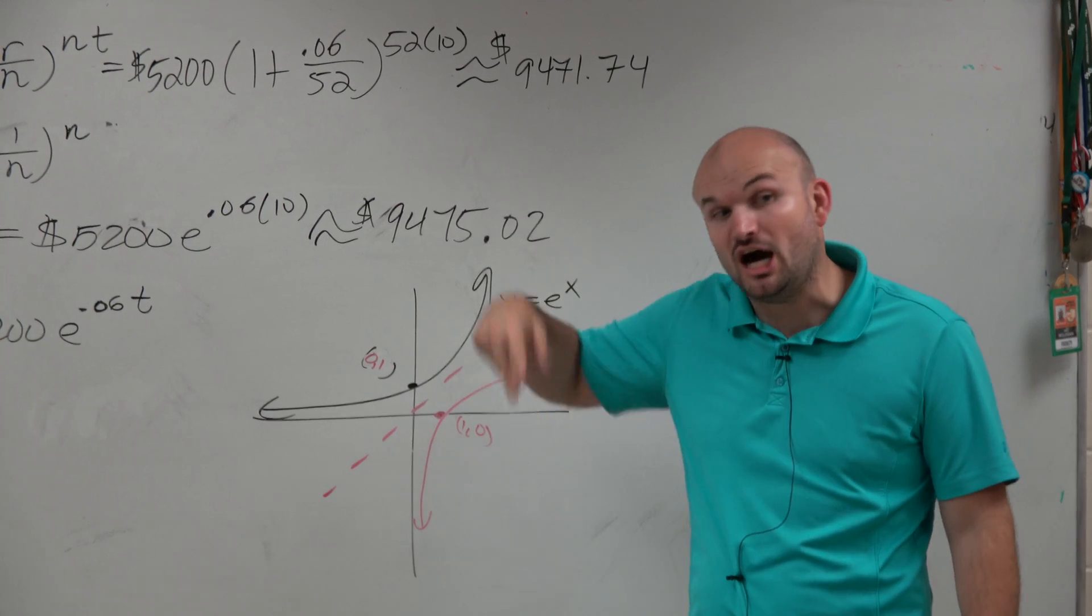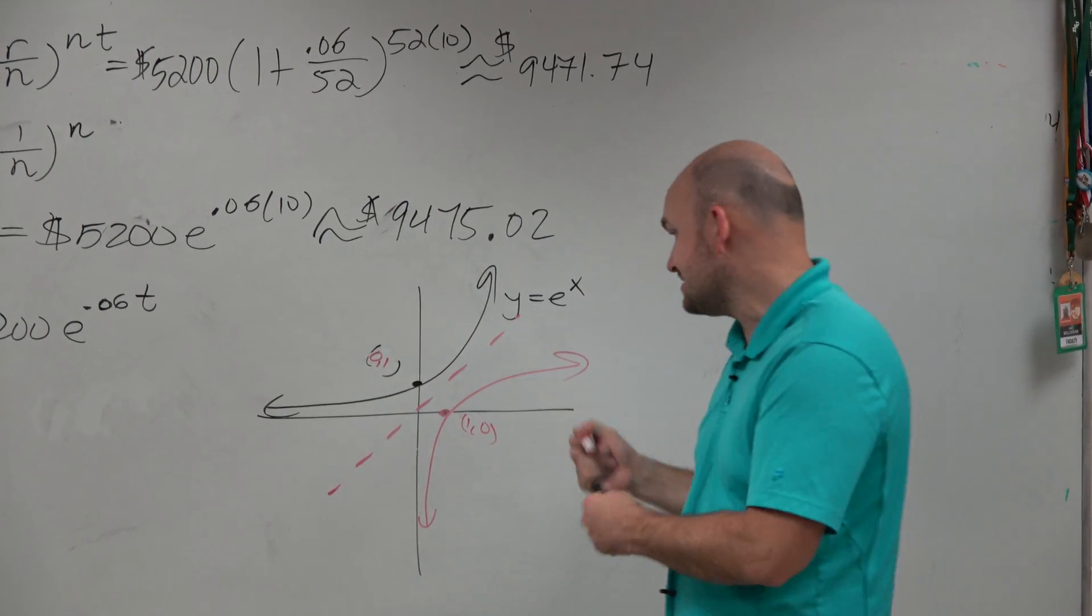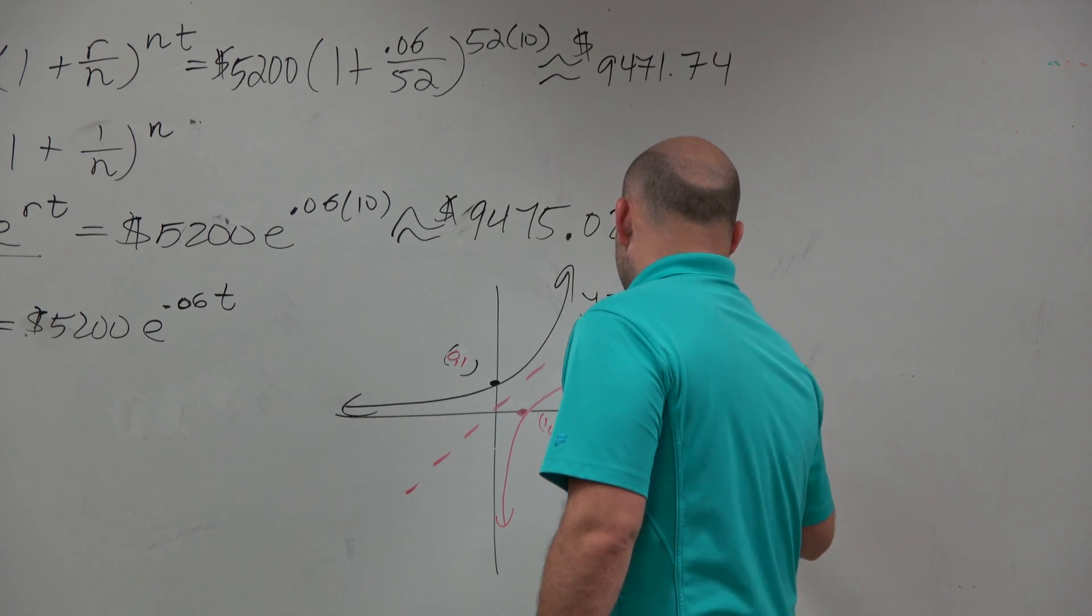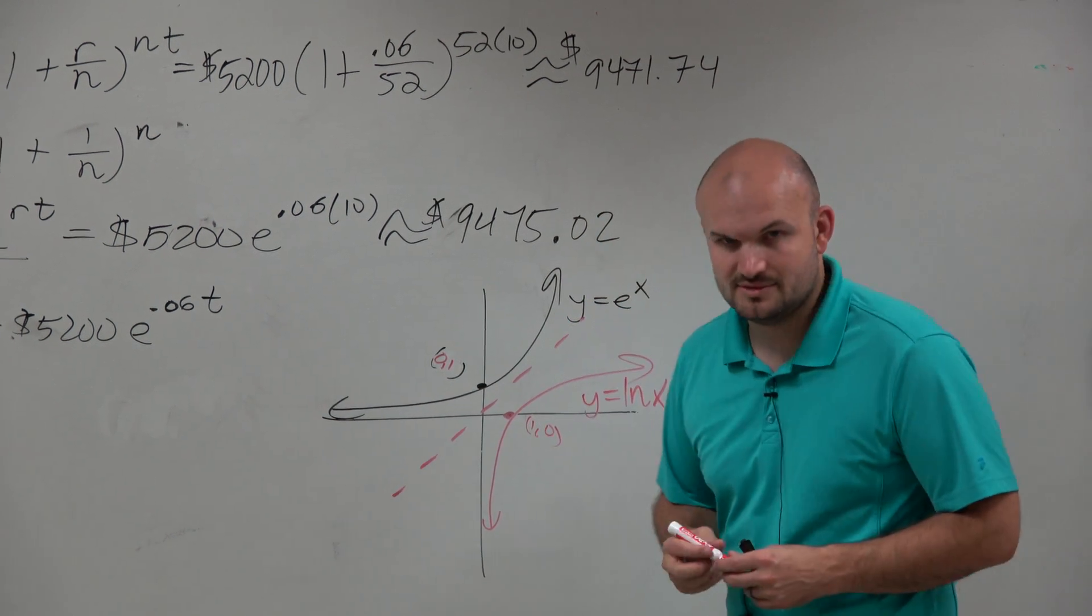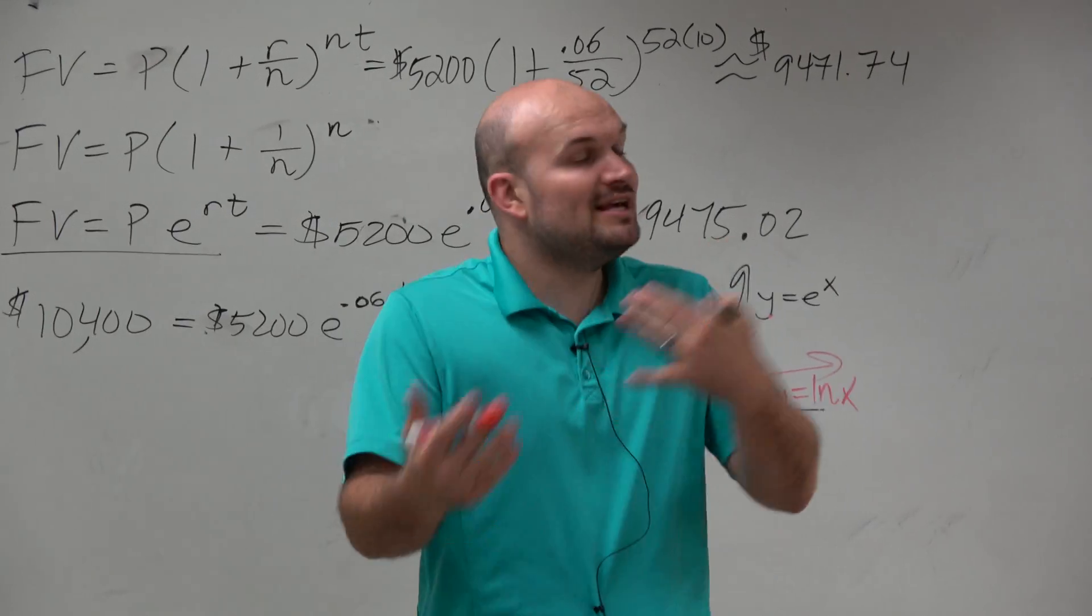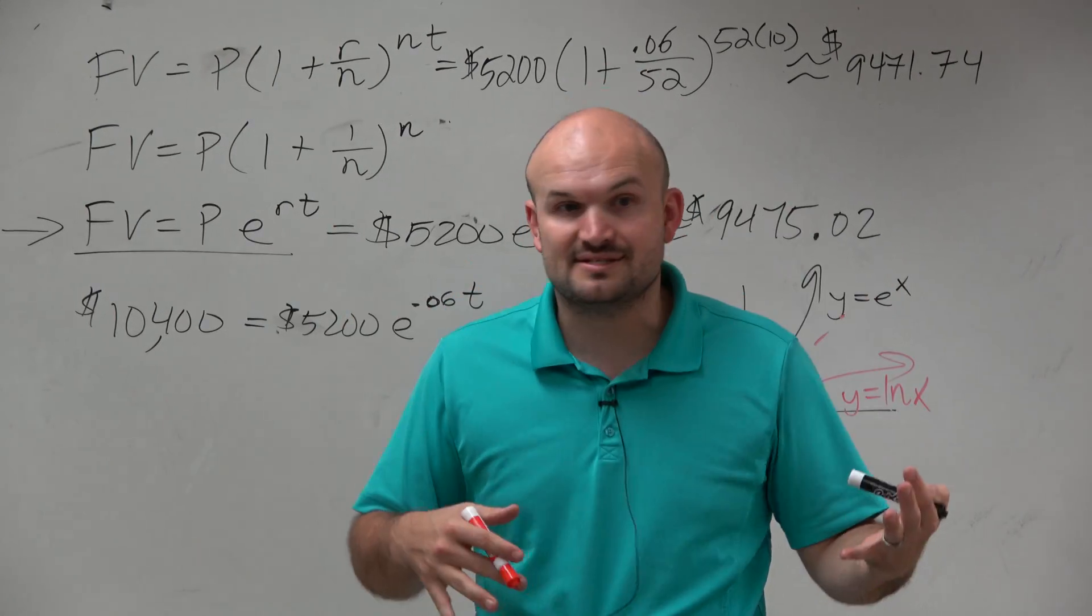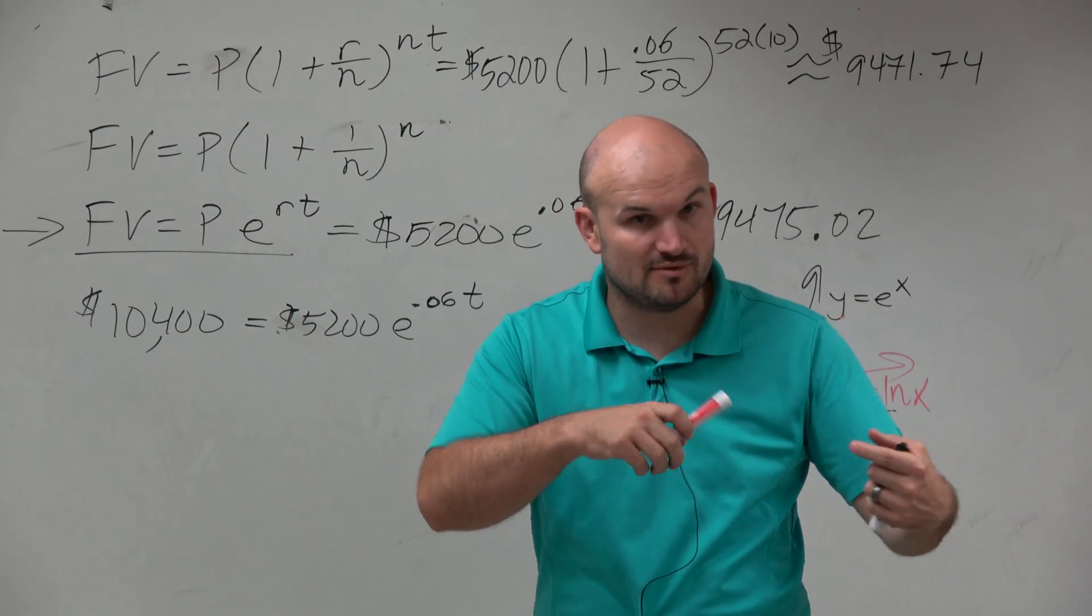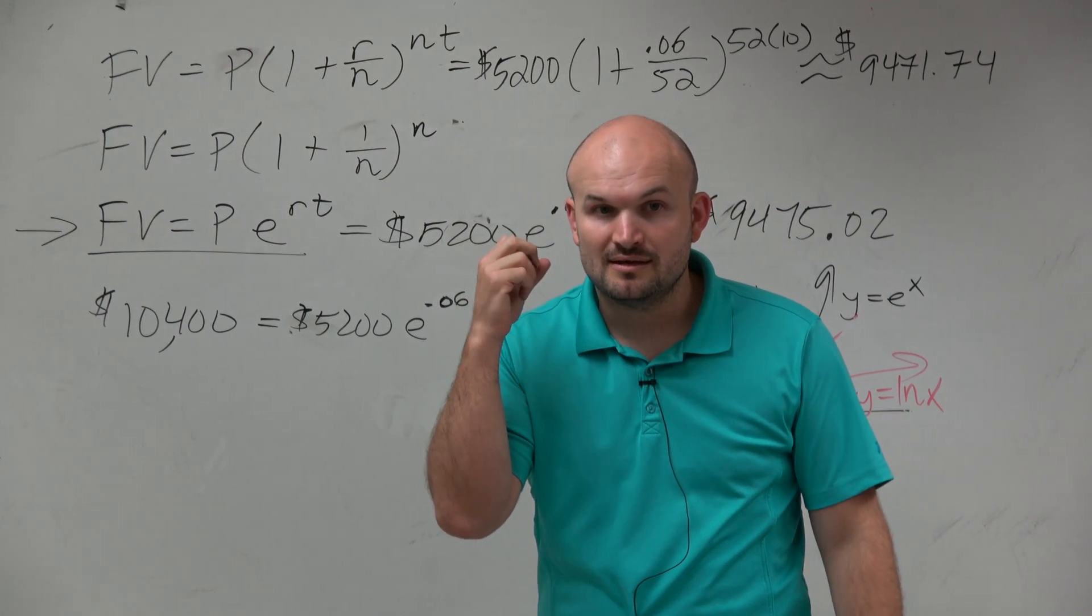e to the x, the inverse, what undoes e to the x is the inverse, which in this case is ln of x. So ln of x is your inverse of e. It undoes your e to the x. Remember when we plugged in the function into its inverse, and what did you get back? What did you get back?